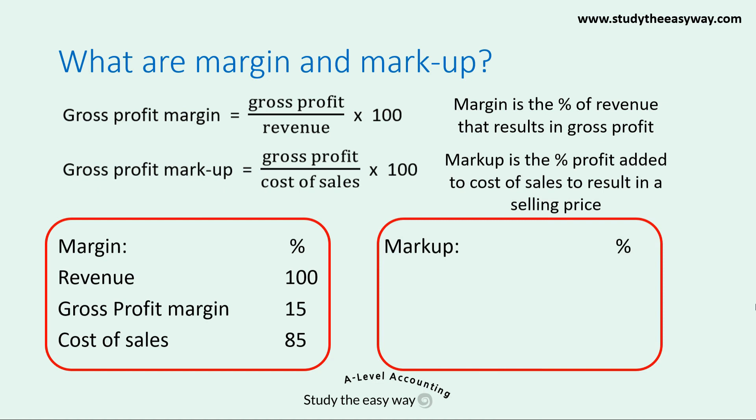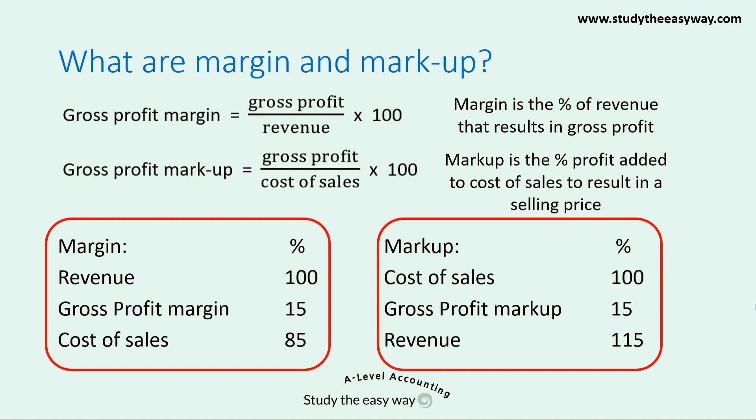We can state markup in the following way. Cost of sales is our start point, and we deem that to be 100. If the gross profit markup is 15, this is the amount of profit we add to cost of sales to result in a revenue figure. So revenue is cost of sales of 100 plus gross profit markup of 15, resulting in a revenue of 115. Please make sure you're very clear about these relationships before you move on, because they are fundamentally important.